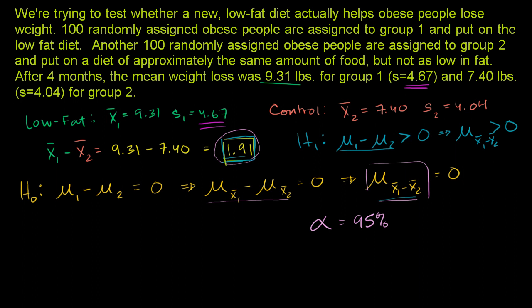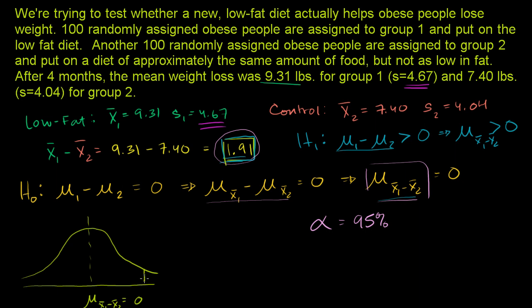The null hypothesis says that the mean of our distribution of differences of the sampling distributions should be equal to 0. We need some critical value here such that the probability of getting a sample from this distribution above that value is only 5%. Since our sample size is 100, we can use z-scores and assume a normal distribution. Looking at a normalized normal distribution, we want the critical z-value where there's only a 5% chance of getting a result above it — meaning 95% of the area is below. Looking at the z-table for the one-tailed case at 95%, that gives us approximately 1.65.